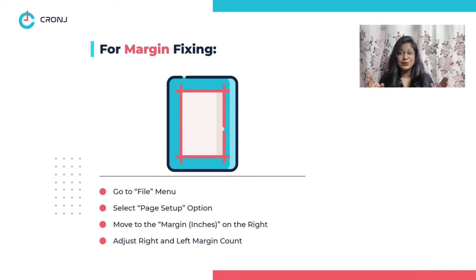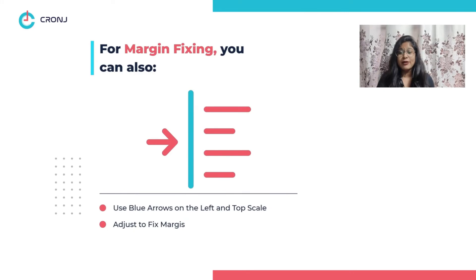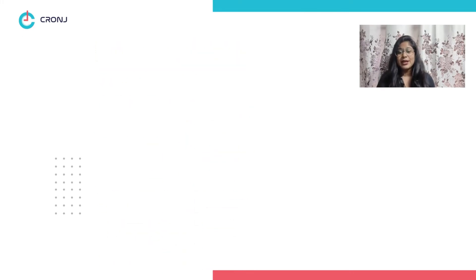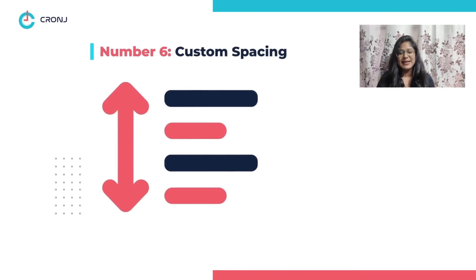Number five: margin fixing. Another way to get rid of those unwanted pages in Google Docs is by fixing up those margins. For that, go to the File menu and select the Page Setup option. Next, go to the margin inches section and adjust the right and left margin count. You can also use the blue arrows on the left and top of your document to fix the margins as well.